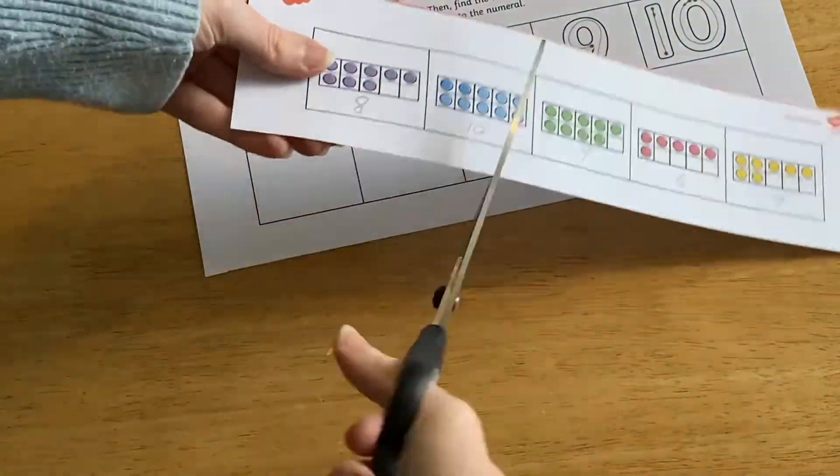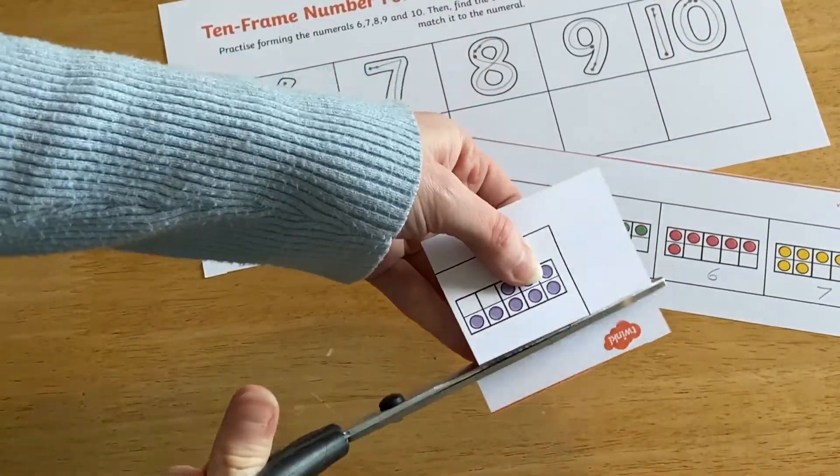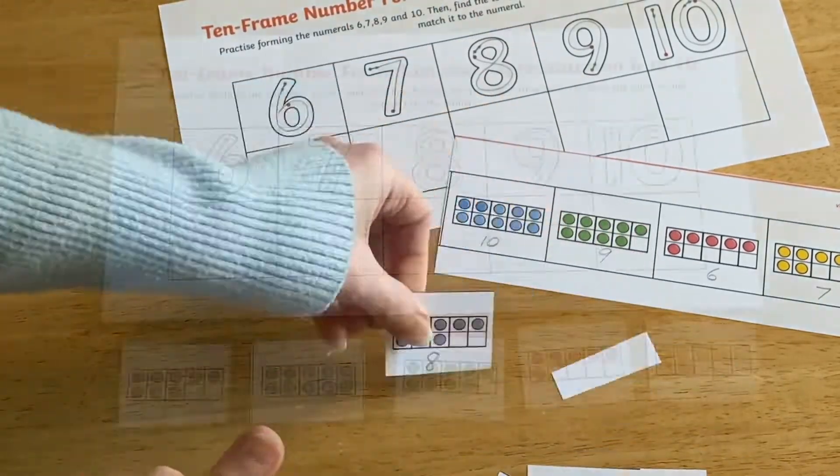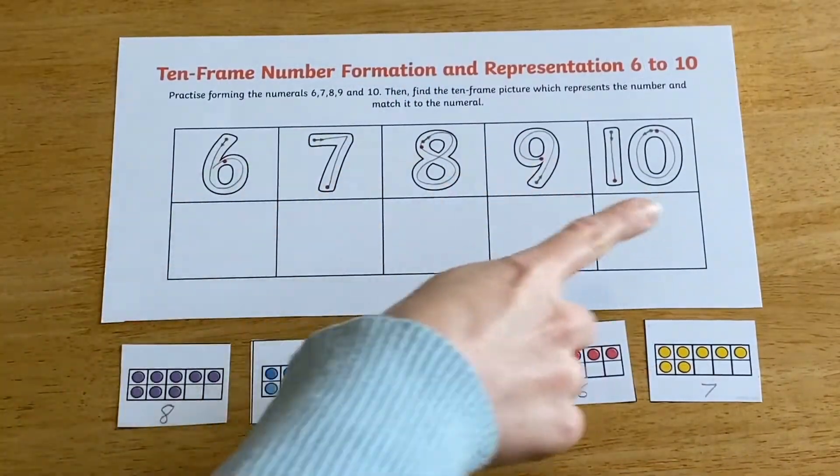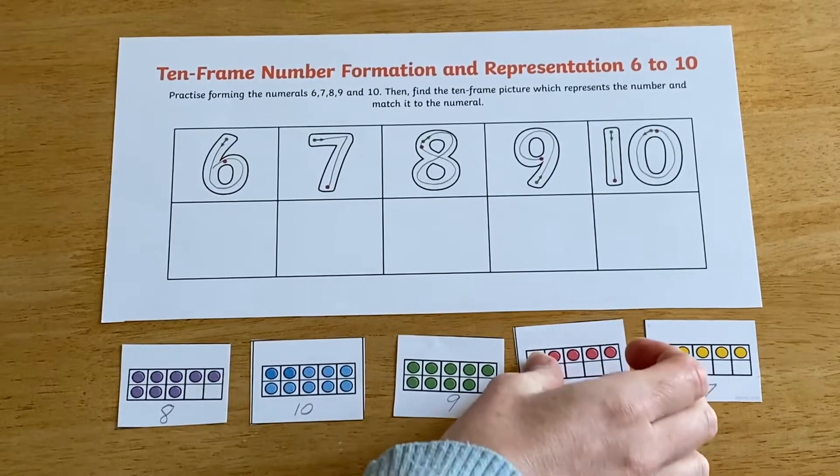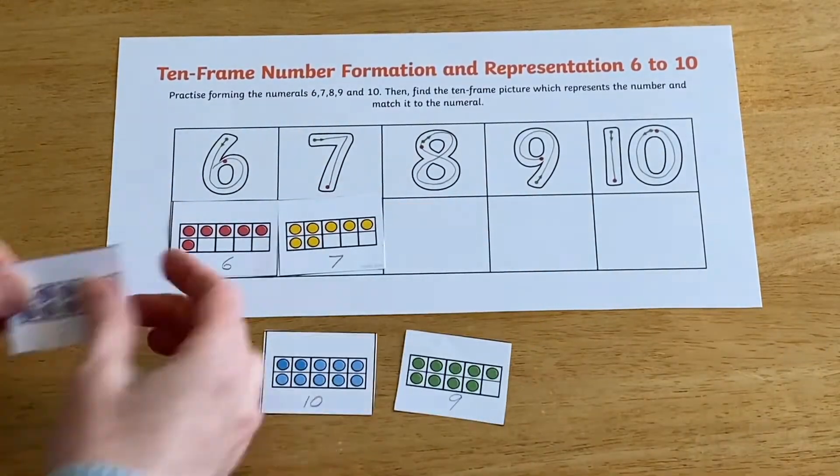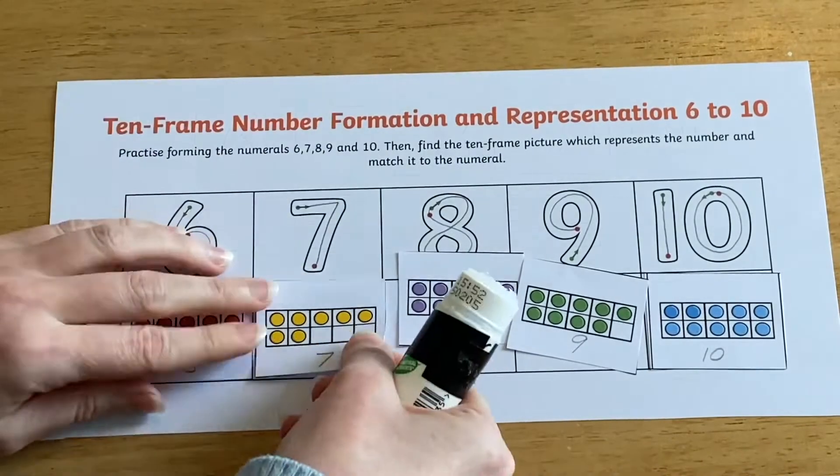Children can practice their cutting and fine motor skills by cutting out the number representations before matching the representation to the correct number. Children may find it helpful to put the numbers in order first of all before sticking anything down.